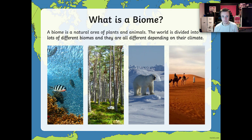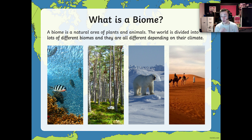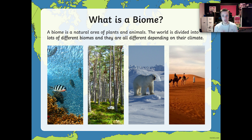So, biomes. What is a biome? Now this is your key phrase, so somewhere in your books you might want to write this down. A biome is a natural area — not man-made. It is a natural area of plants and animals. The world is divided into lots of different types of biomes, and they are all different depending on their climate. Within that biome, you will have a certain climate.